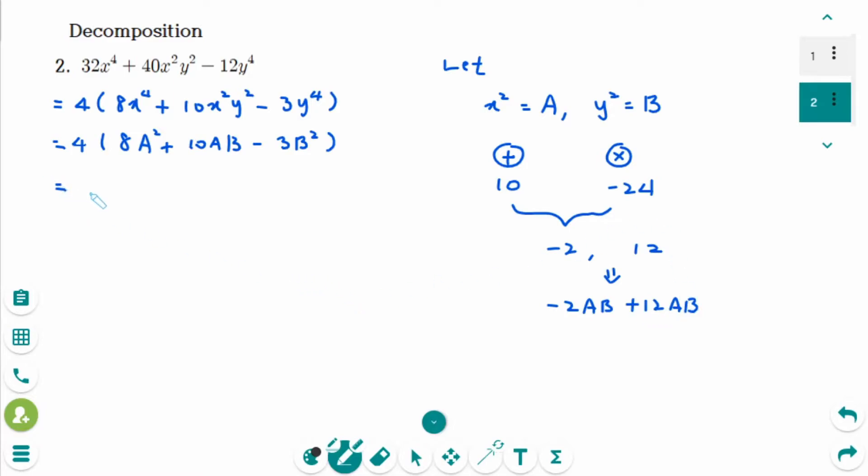So we can break into minus 2AB plus 12AB like this. So 8A squared minus 2AB plus 12AB together makes 10AB. Then minus 3B squared.